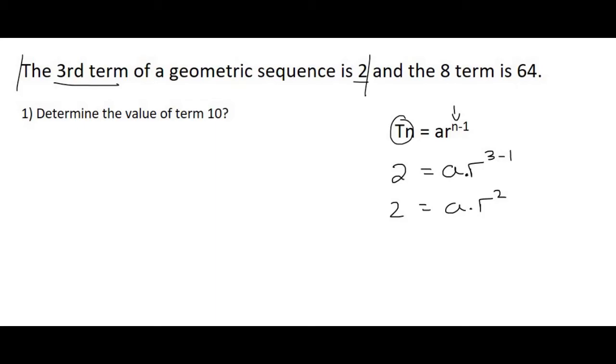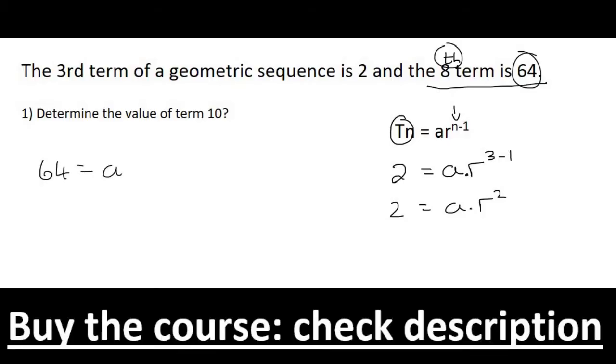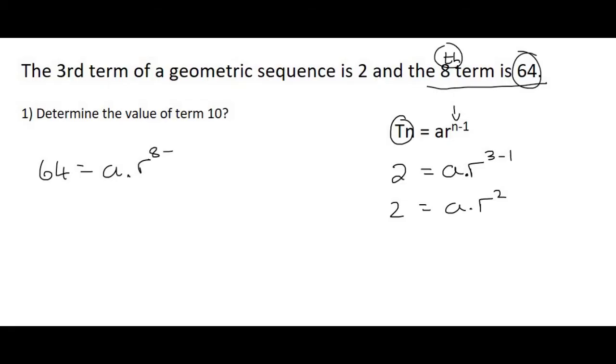So you go to the next piece of information. The next piece of information tells us that the eighth term, well I should have had an eighth over there. Terrible, eh? And the eighth term is 64. So we go fill it in. So the value is 64. So we'll say 64 is equal to AR. And then N is the position, so that's going to be 8 minus 1. We then go simplify, and so that's just going to give us AR to the power of 7. And there we have it. Two equations, two unknowns, simultaneous.